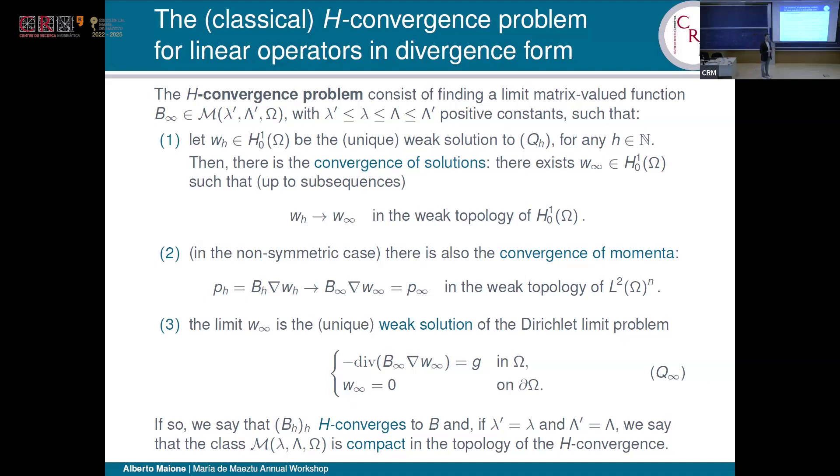The second requirement, which is very important in the non-symmetric case, because in the non-symmetric case, if we perturb here by skew-symmetric matrices, the divergence doesn't see it. So we have to ask something more, to have also the convergence of the momentum, always in the weak topology, natural. And then what we ask is, if the limit function W-infinite is also a solution to a similar problem, to the homogenized problem in the theory of homogenization. This is always satisfied in the linear case. This is for free in the symmetric case, while in the non-symmetric one, it's a bit delicate.